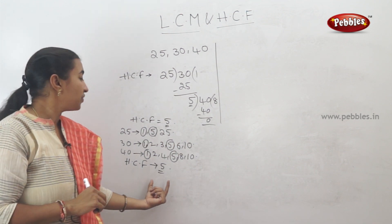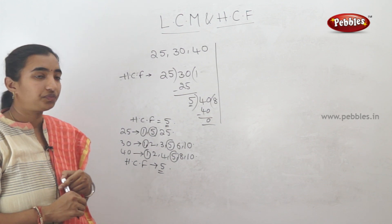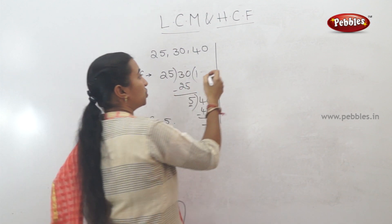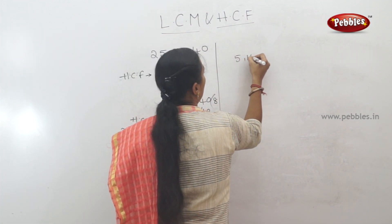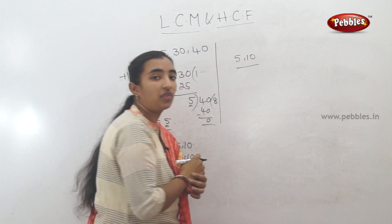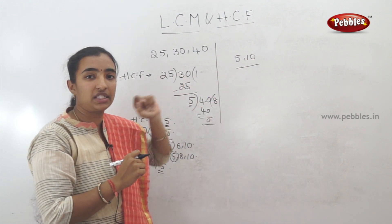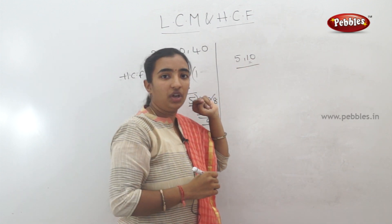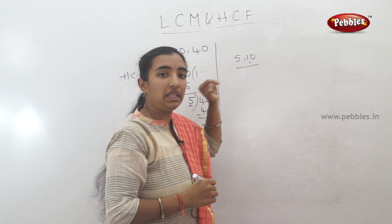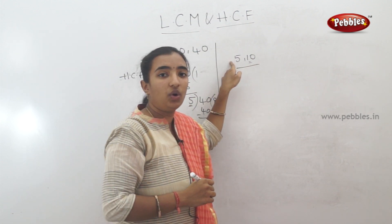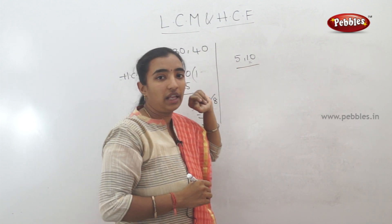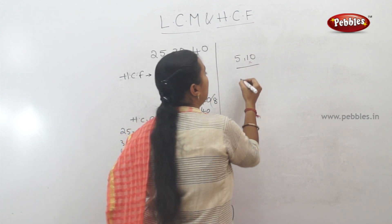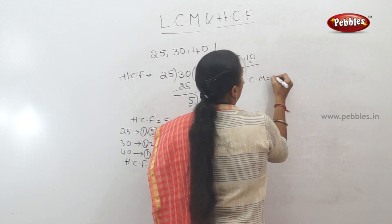This is the shortcut method. Now for LCM, there is another method to find it in a single step. For example, suppose 5 and 10. Since 10 is a multiple of 5 — that is, 5 divides 10 — the LCM is simply 10.